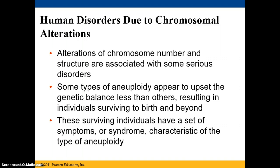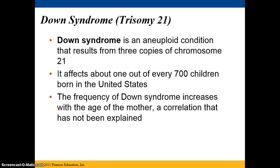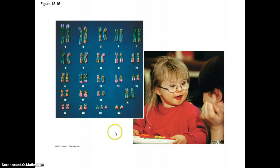There are many human disorders due to chromosomal alterations. Aneuploidy appears to upset the genetic balance less than others, so sometimes individuals survive to birth and beyond with abnormal chromosomal numbers, displaying a syndrome characteristic of the type of aneuploidy. Down syndrome, which I mentioned previously, is trisomy 21 — three copies of chromosome 21 — and affects one out of every 700 children born in the United States. As the age of the mother increases, so does the frequency of Down syndrome. In the karyotype shown, you can see three copies of chromosome 21 while the rest is normal.